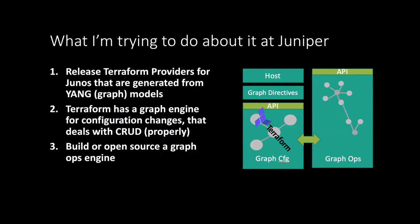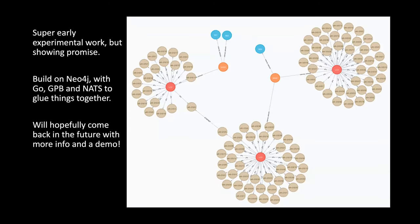I'm pushing really hard inside Juniper to get Terraform providers built for all major platforms and major software versions - probably from version 14 onwards up to the latest releases - covering MX, PTX, SRX, EX, ACX, and all these different platforms. That's sitting with engineering right now. We've got an alpha on NRE Labs. The Terraform tool gives us this graph configuration engine where we create these relationships and ordering isn't important - especially for Junos, because Junos sorts that out. What we don't have sorted out yet is the graph ops system, which I'm looking at building either as a product or open-sourcing, and I'd love feedback from this community.